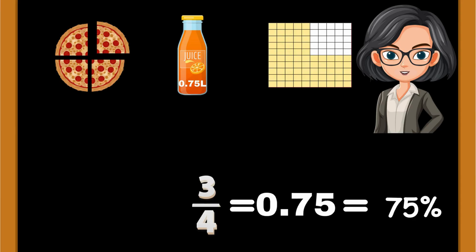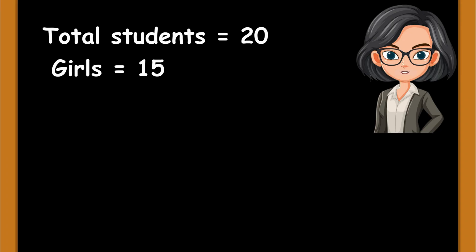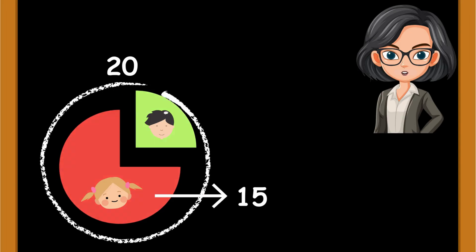I'll make it easy for you to understand. Let's say we have a class of 20 students. Imagine 15 of them are girls and the rest are boys. If we show this on a pie chart, we'll see that 15 out of 20 students are girls.